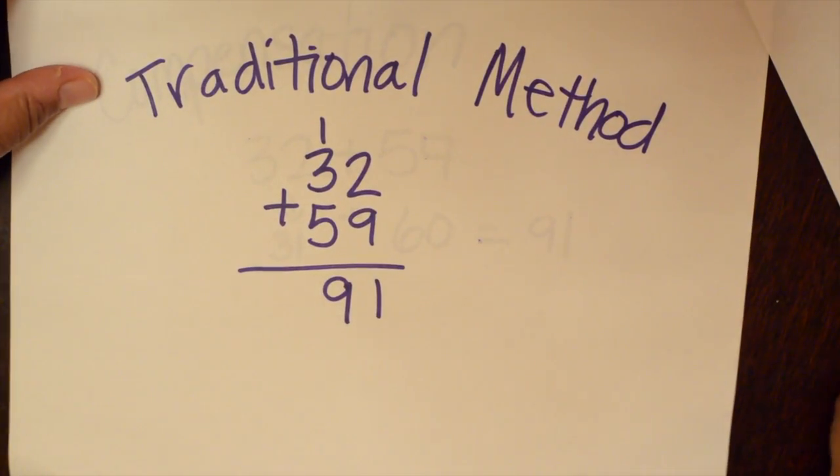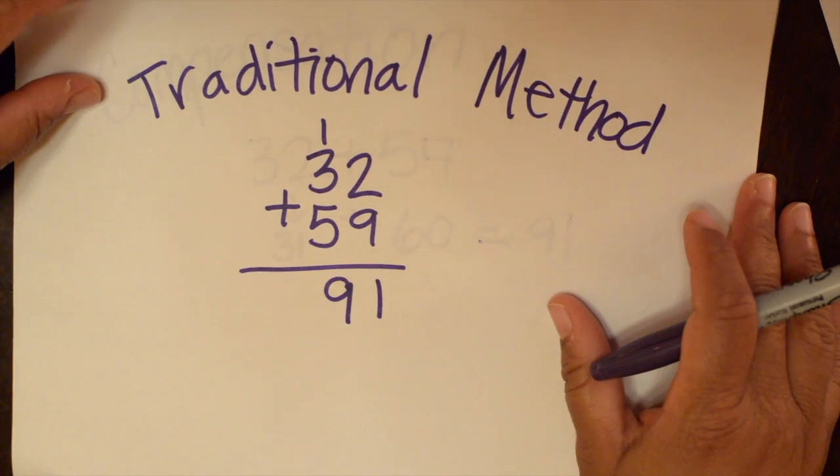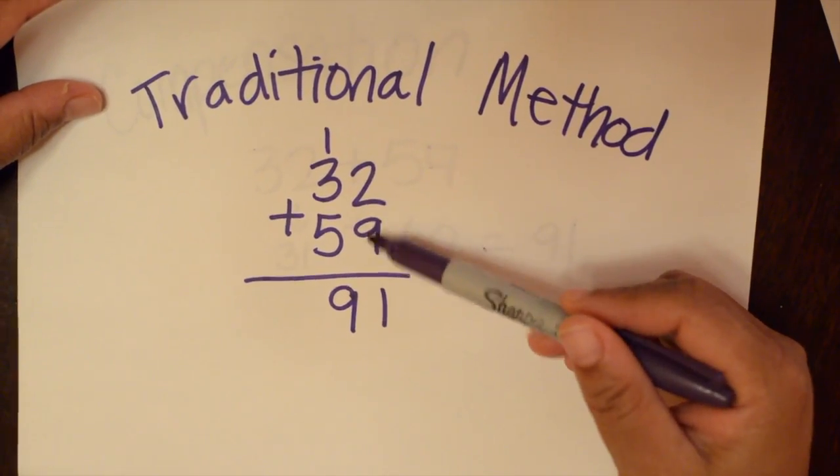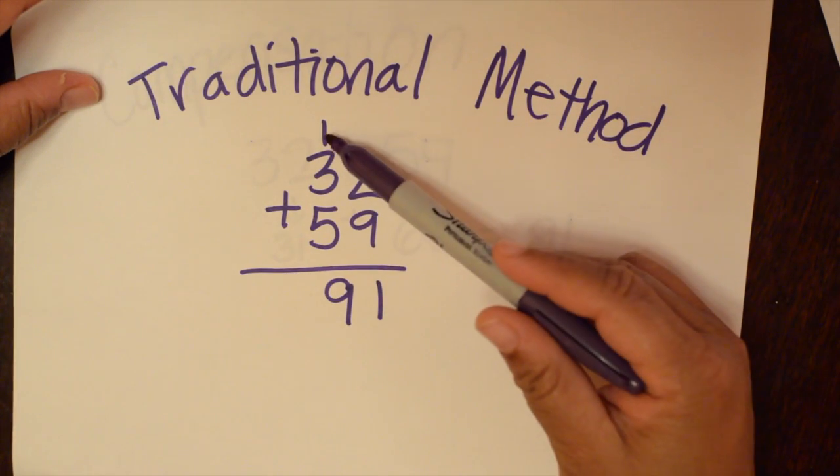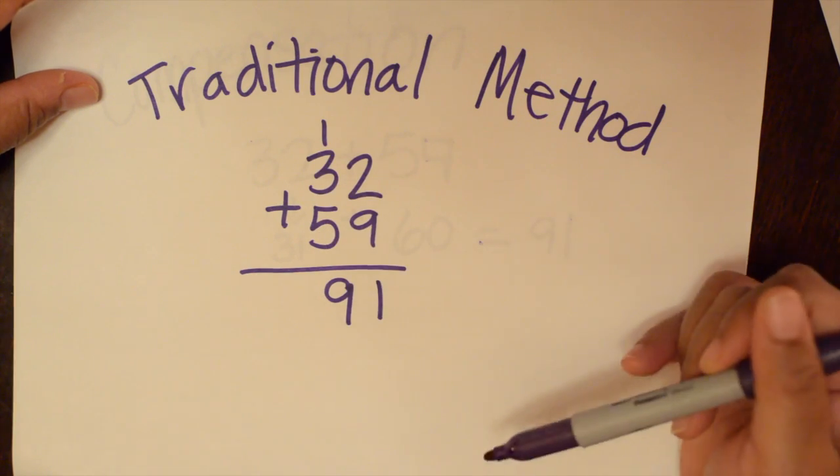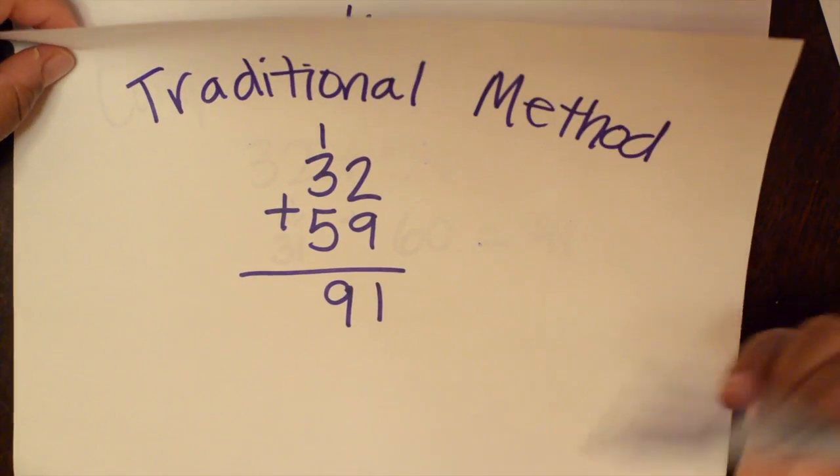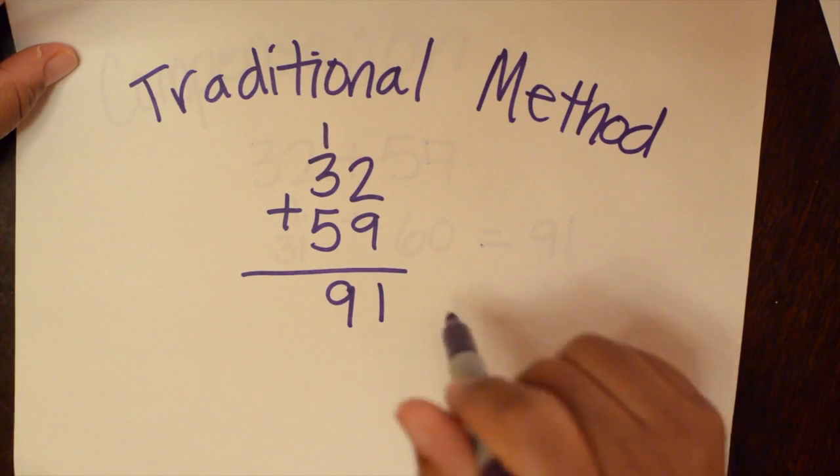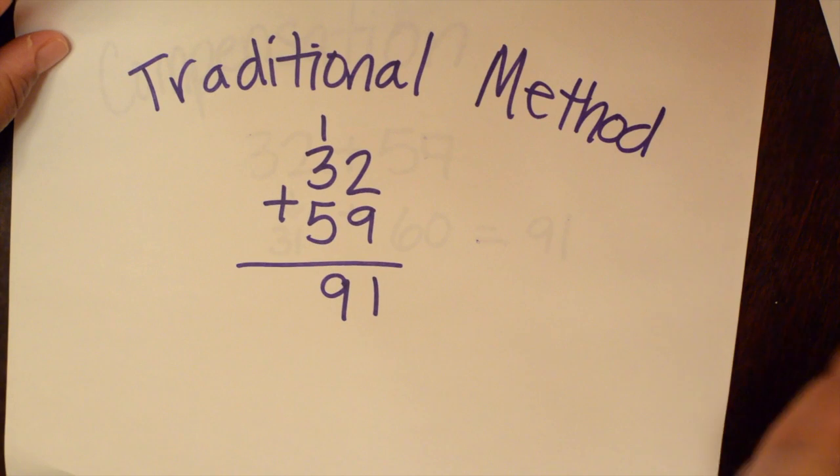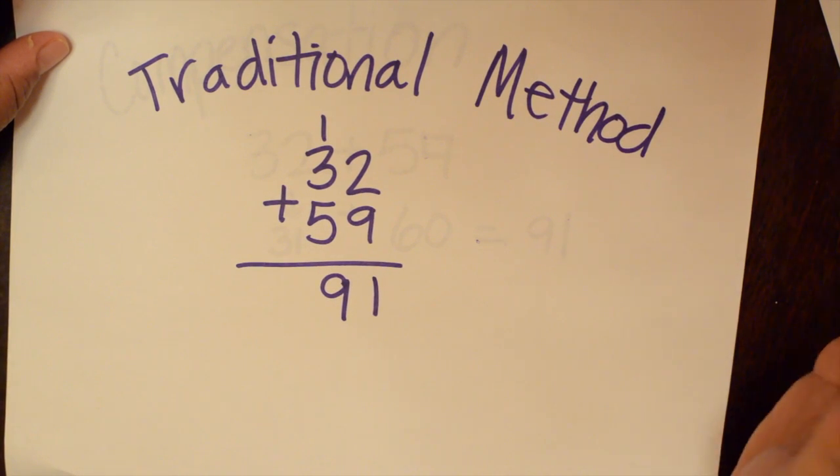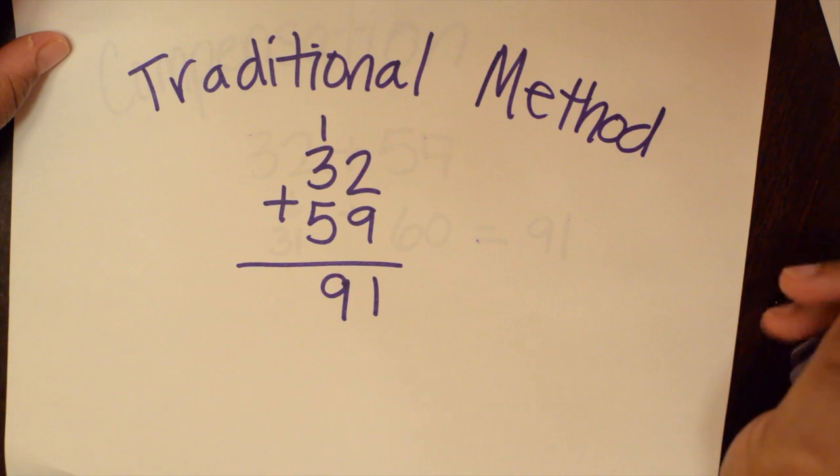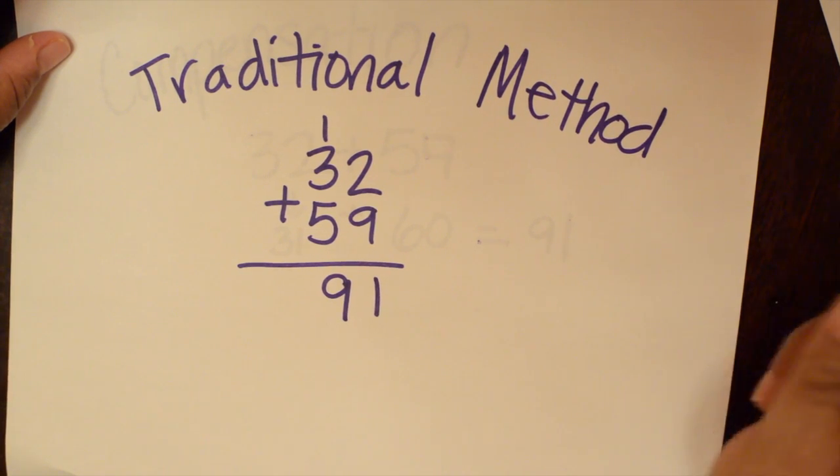The next way is the traditional method, and this is just where you're just regrouping. You know, 9 and 2, you get 11. You are going to regroup 10 of those, and now you have 10 and 30 and 50, and you get 9, so you have 91. Traditional method. There's a lot of controversy wherever I go in different states. Teachers are arguing about whether to teach the traditional method or not.